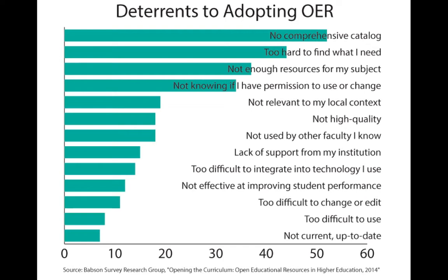A recent study found the deterrents for faculty on adopting OER, and the largest one was not having a comprehensive catalog of OER textbooks. They're too hard to find what they needed, there's not enough resources for their particular subject, and not knowing if they have permission to use or change the textbooks themselves.